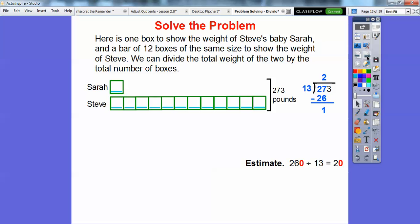So 2 times 13 is 26. When we subtract 27 minus 26 is 1. We'll slide down that 3. And then look, 13 goes in there one time perfectly. So we don't have any remainder. Let's go ahead and write the quotient right up here.